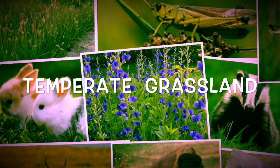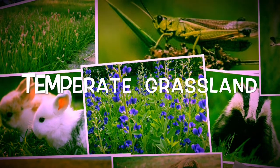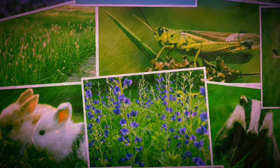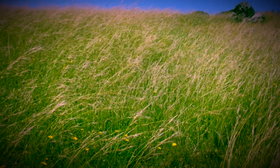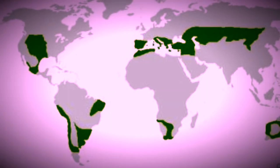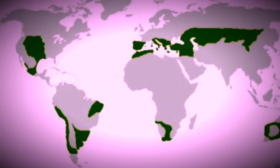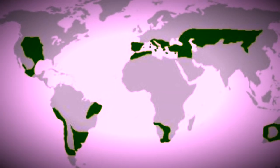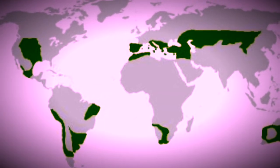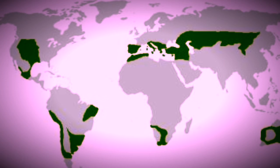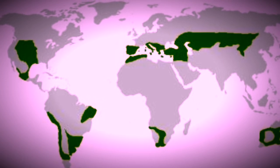Now let's look at the temperate grassland. Temperate grasslands are known for their beautiful colors, and you can find this biome all around the world, such as the US, Canada, Chile, and Australia.